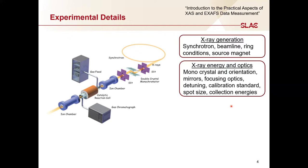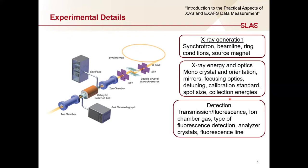How did you calibrate the energy? Did you collect a calibration standard along with your sample measurements? For imaging experiments, you should specify the X-ray spot size and list out the collection energies if you're doing multi-energy maps. Next, provide details about detection: was this a transmission or fluorescence experiment? Did you use ionization chambers, and if so, what gas were they filled with? If this is a fluorescence experiment, specify the type of detector. For a HERFD experiment, include details on the analyzer crystals and the fluorescence line used to collect the data.